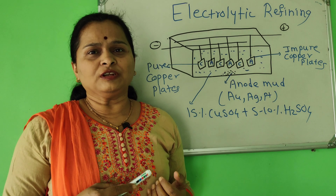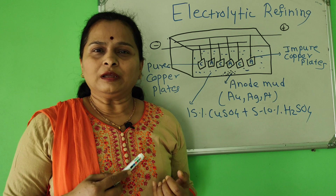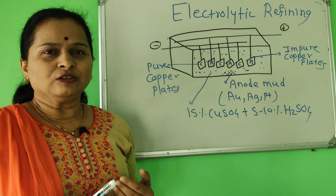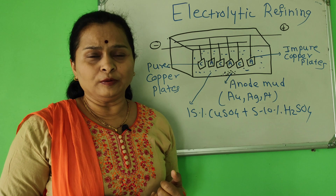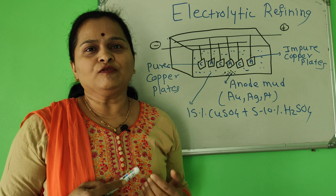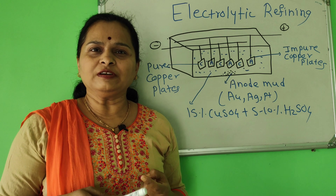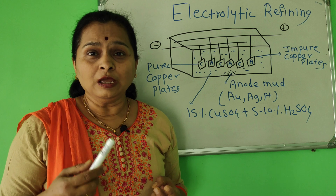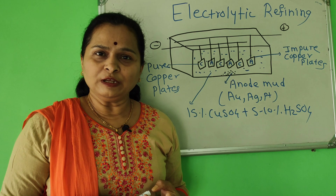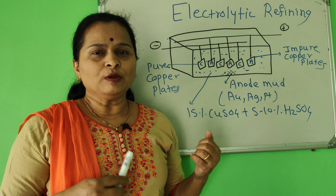Then, extraction of iron from hematite ore. In hematite ore, 70% iron is present. Therefore, extraction of iron is from hematite ore. In that process, we have seen different processes like physical process — gravity separation, magnetic separation — then chemical process: roasting, then reduction by smelting process. This is extraction of iron from hematite ore.